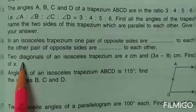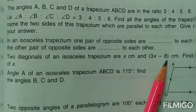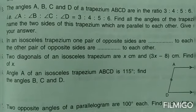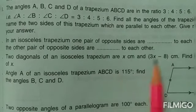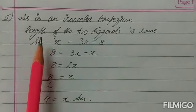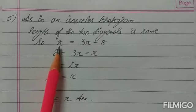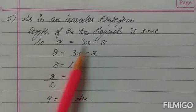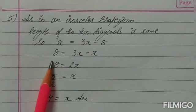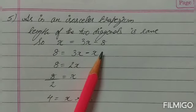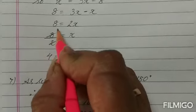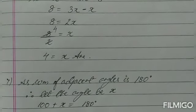Question number 5: two diagonals of an isosceles trapezium are X and 3X minus 8. Find the value of X. In an isosceles trapezium, the two diagonals are always of equal length, so we equalize both. Setting X equal to 3X minus 8: bringing like terms together, the minus 8 becomes plus 8, and 3X minus X gives 2X. So 8 equals 2X, meaning X equals 4.